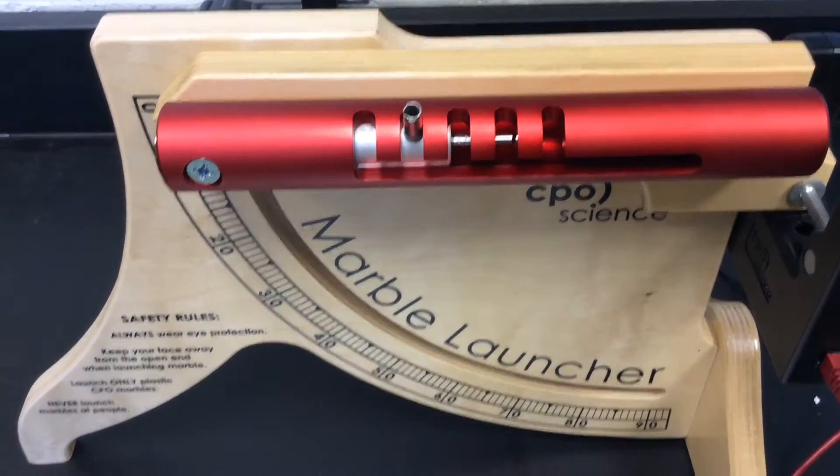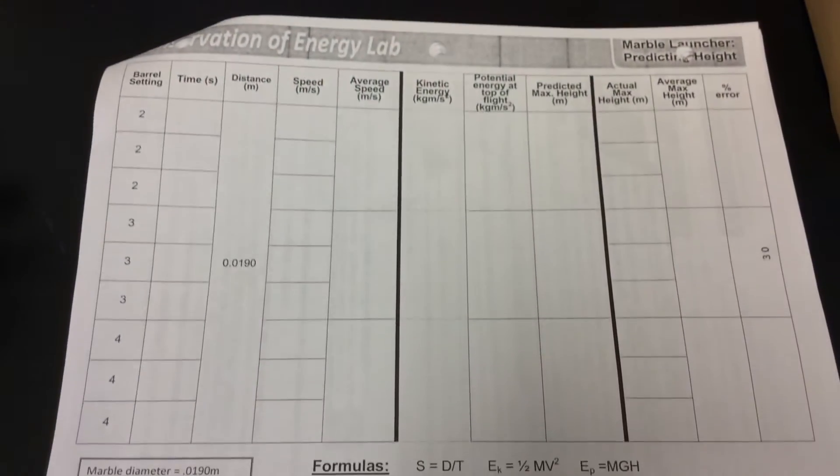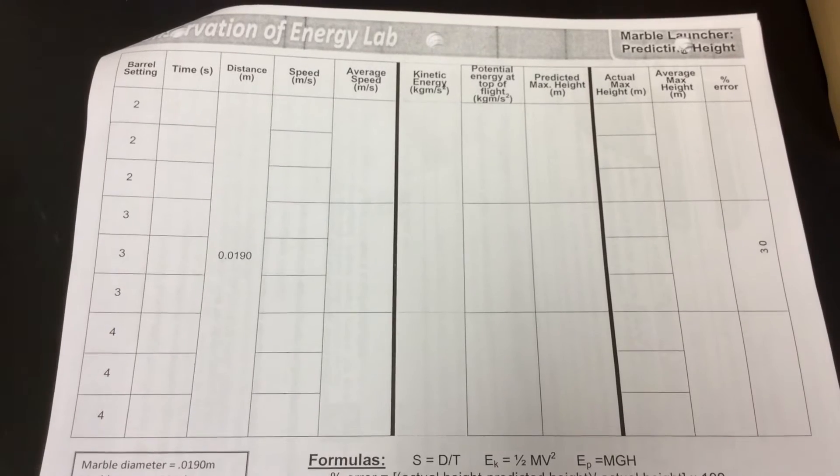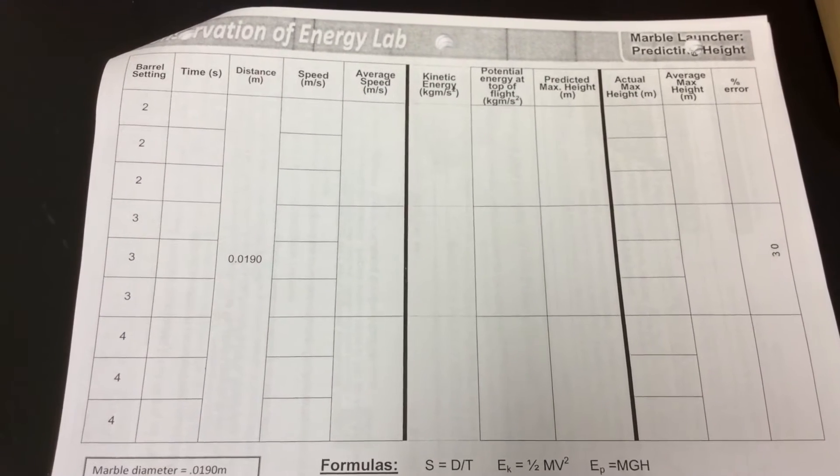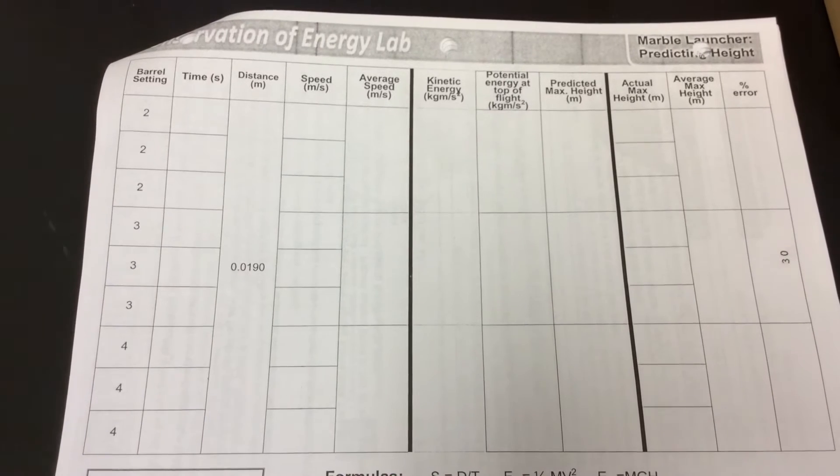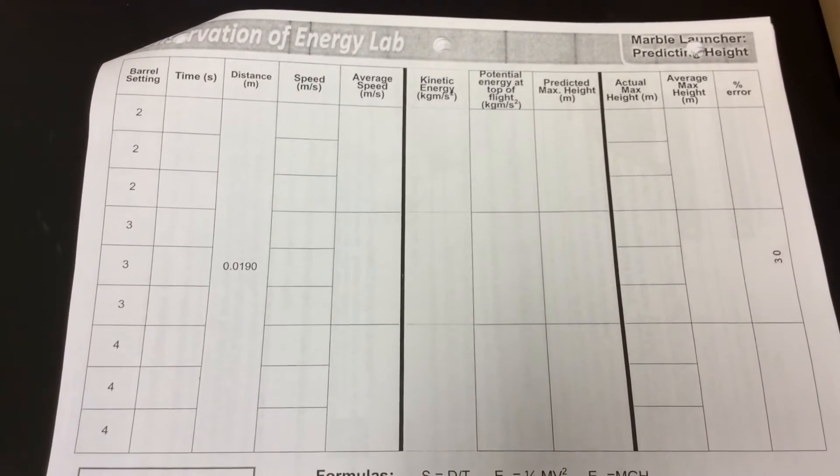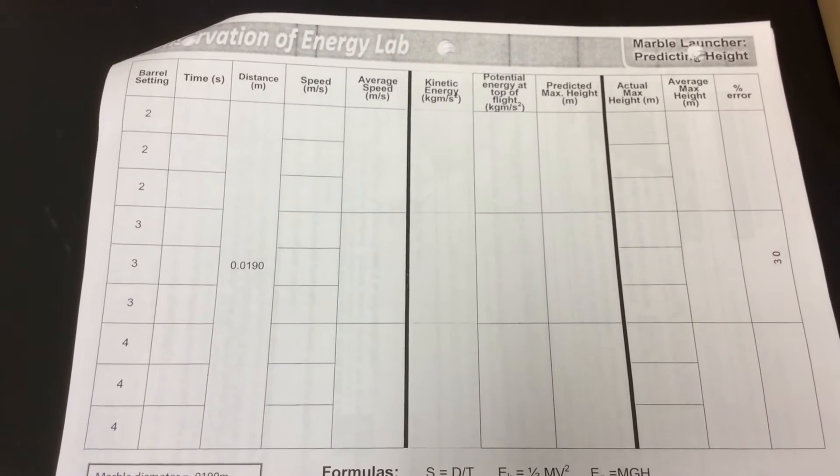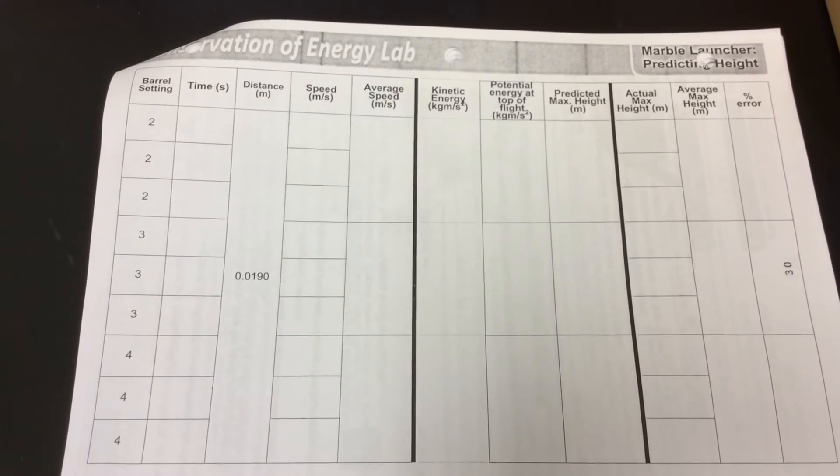You can see part three to take a look at how to do the calculations for speed and for the kinetic energy and potential energy of the marble. You're going to be using this information to then predict the maximum height of the marble when you shoot it straight up in the air.